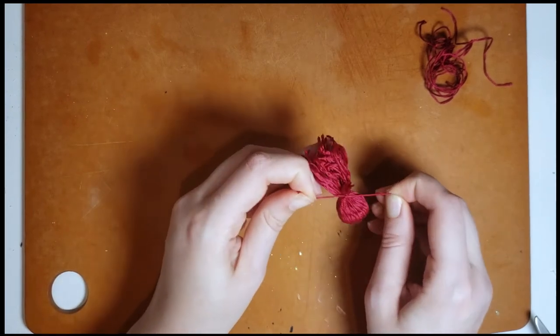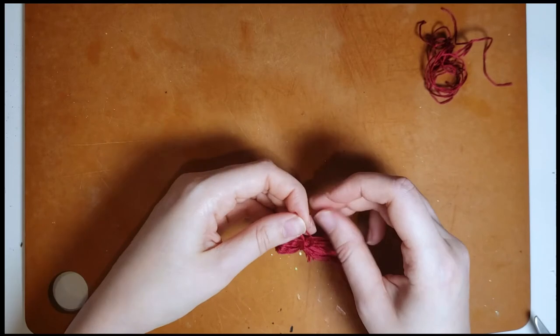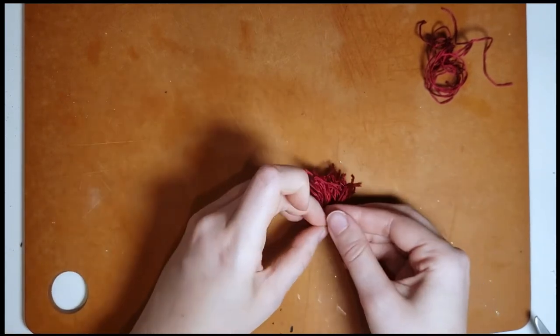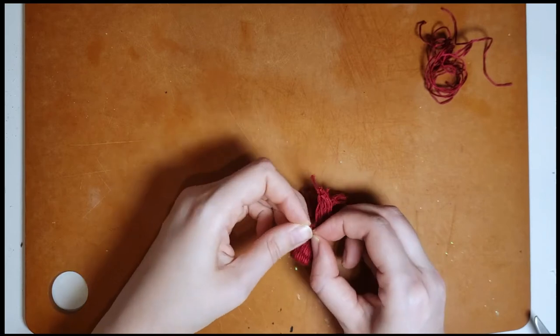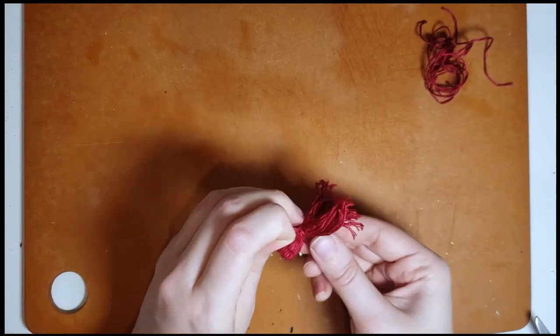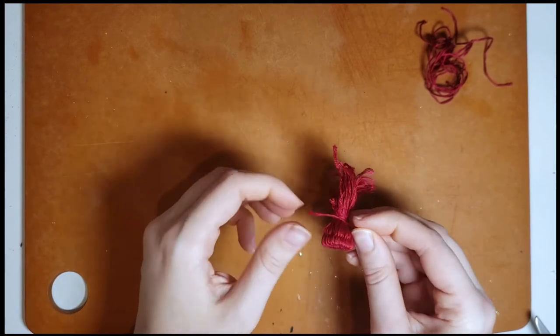So I double tie it here and then I'm actually going to wrap it around again after I've done that and it makes the tip of the hat even smaller and tighter.